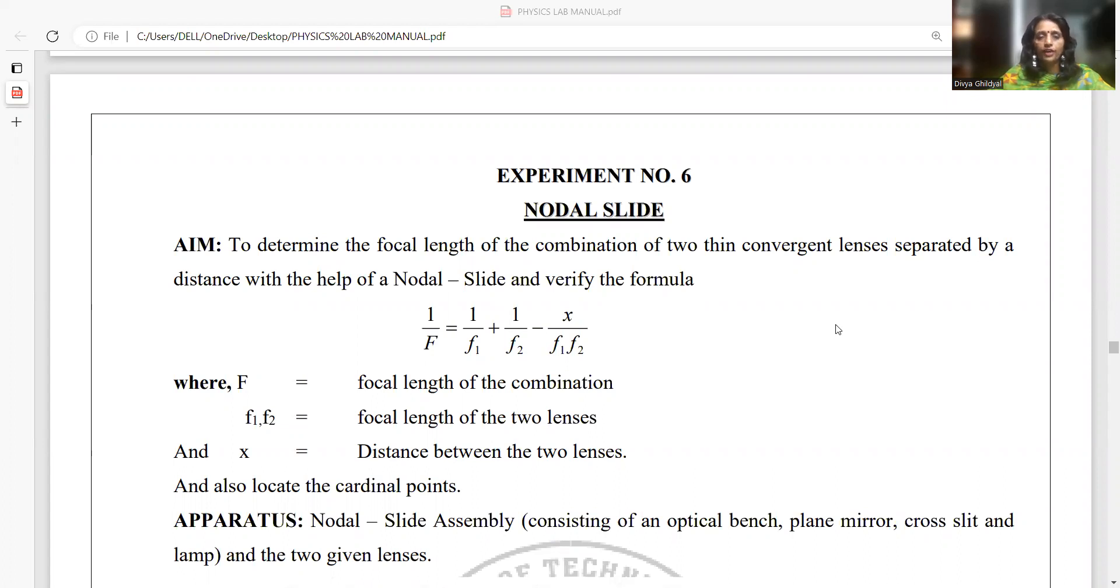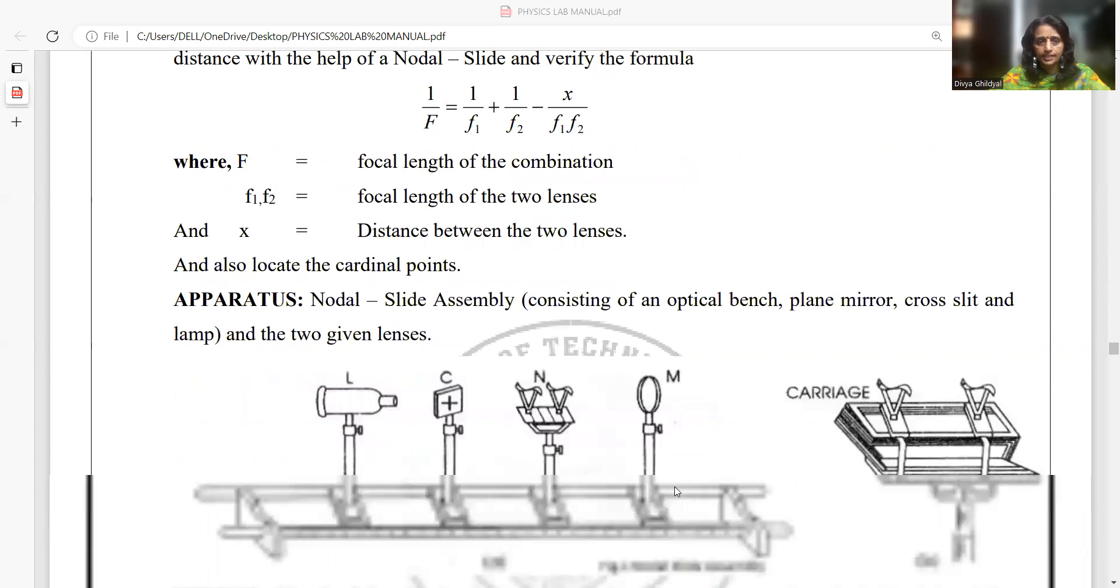In this experiment, you find the focal length of the combination of two thin convergent lenses, which have been separated by a specific distance apart, and verify the formula for combination of thin lenses as 1/f = 1/f1 + 1/f2 - x/f1f2, where f is the focal length of the combination, f1 and f2 are focal lengths of the two individual lenses, and x is the distance between the two lenses, usually taken as 4 cm or 6 cm.